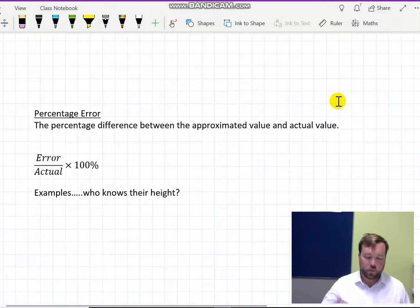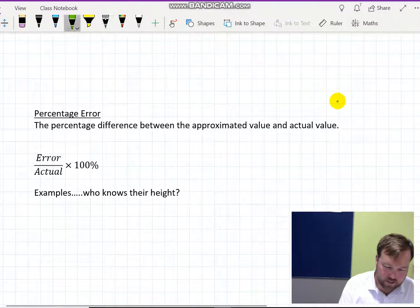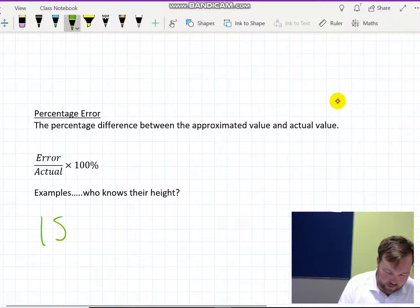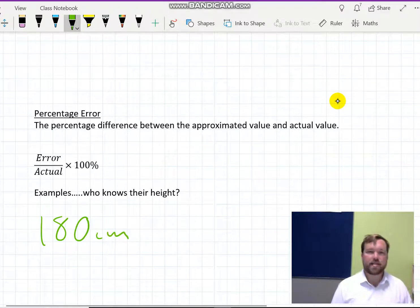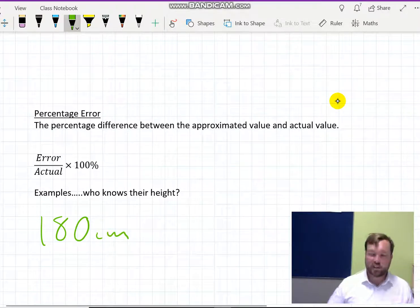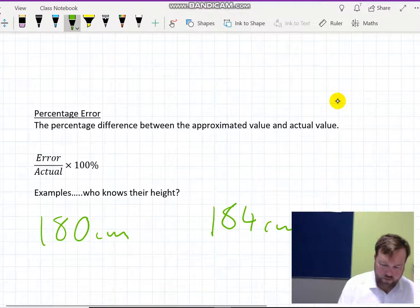So a percent error. And the way that calculation works is, well, the example is, who knows their exact height? Let's say I'd guess my height was 180 centimeters. And then I stand up against a measuring board, and it turns out I'm actually 184.